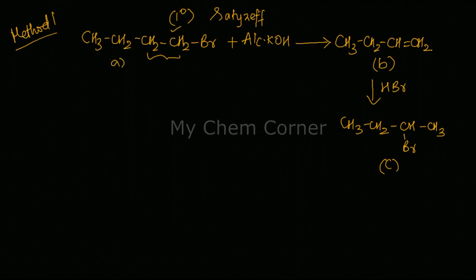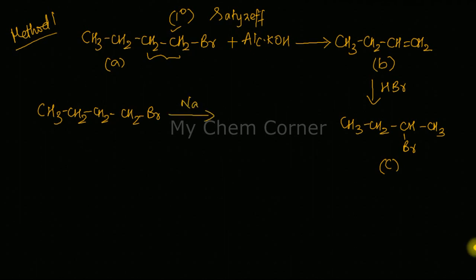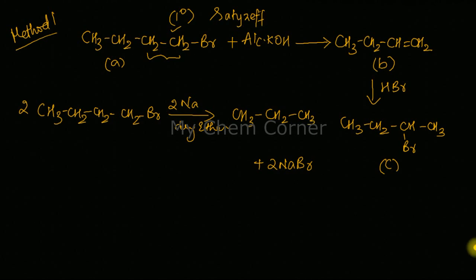Now taking compound A — CH3CH2CH2CH2Br — and reacting it with sodium in dry ether (Wurtz reaction), I need two molecules of A. The Br is removed as NaBr byproduct and the chain doubles. Counting the CH2 groups, I get an eight-carbon straight chain: octane. This is compound D.